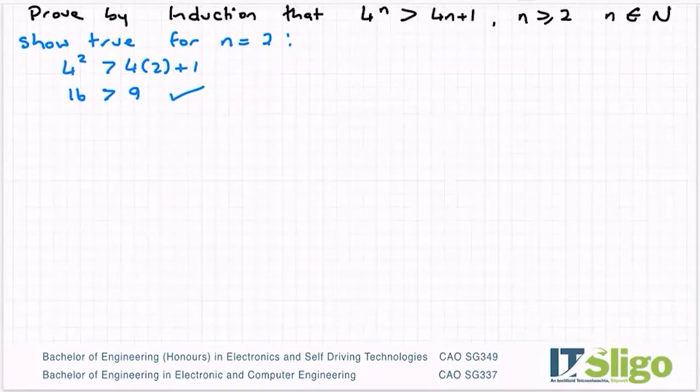And you'll see here straight away that if you had subbed n equals 1, which you could very easily do because it's that in most cases, you'd have got 4 to the power of 1 is greater than 4 times 1 plus 1.